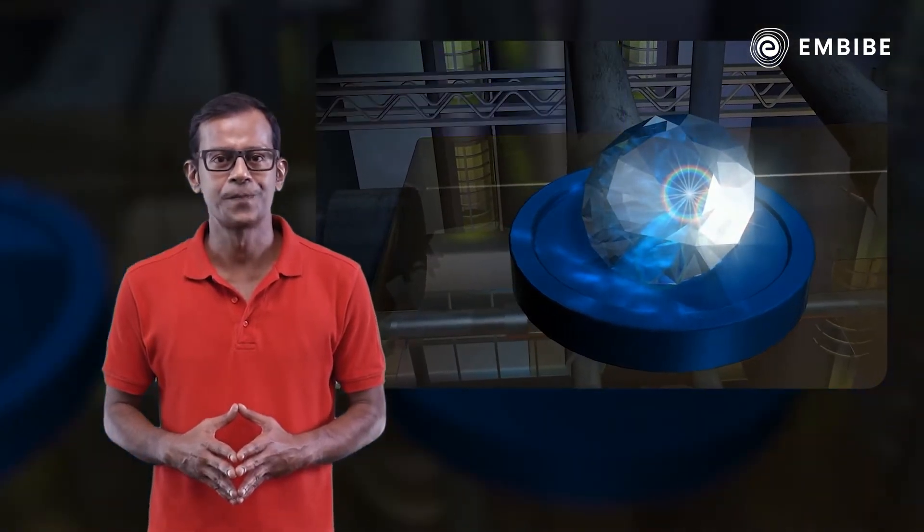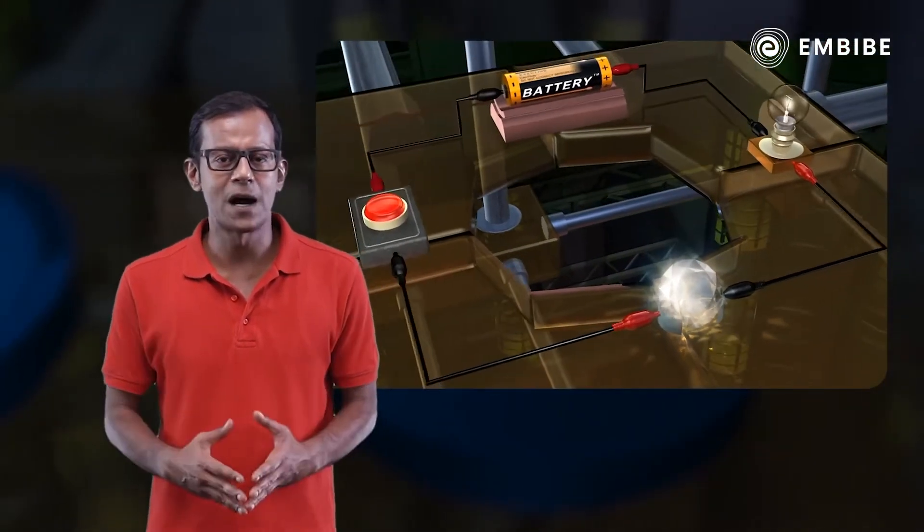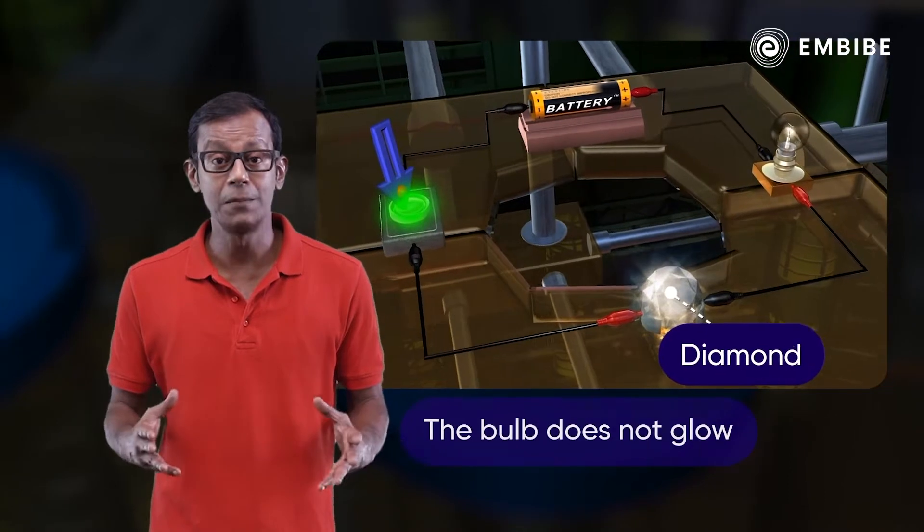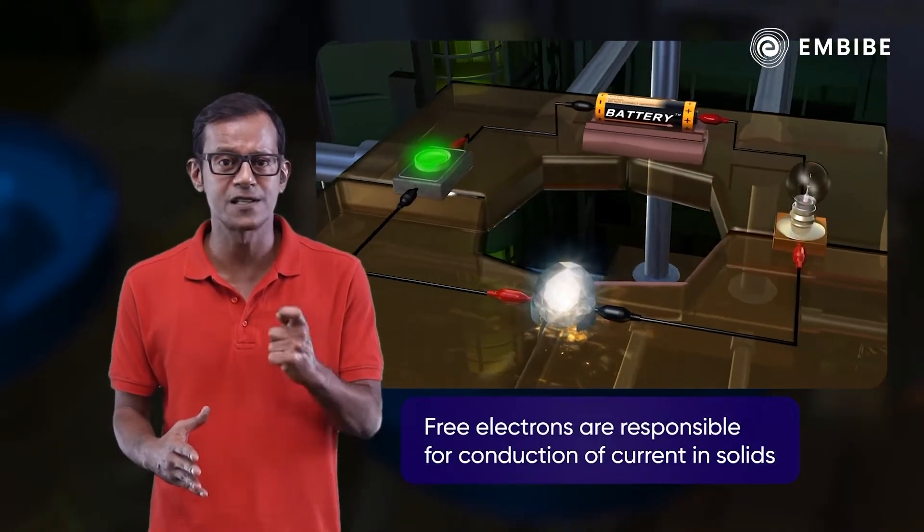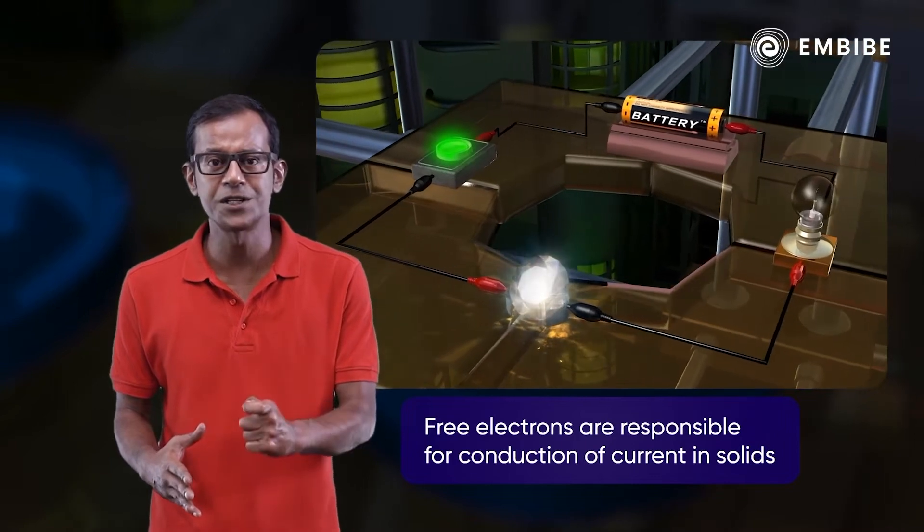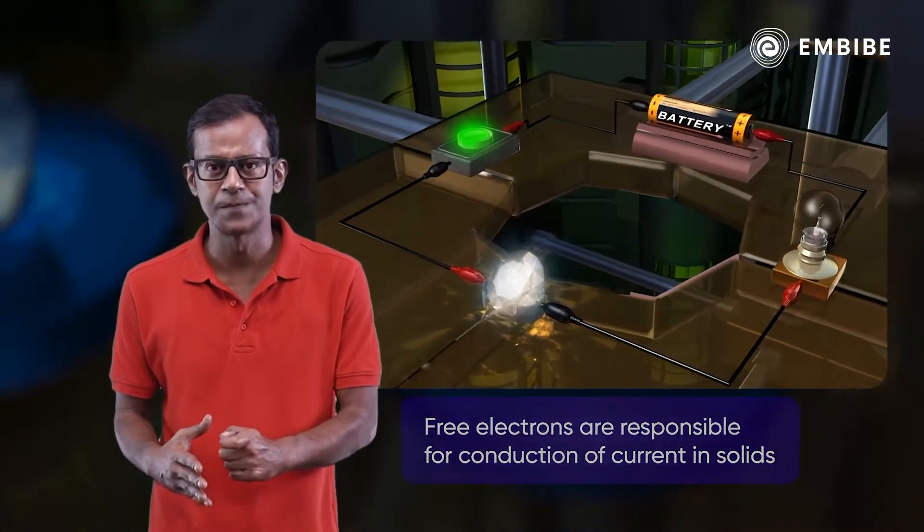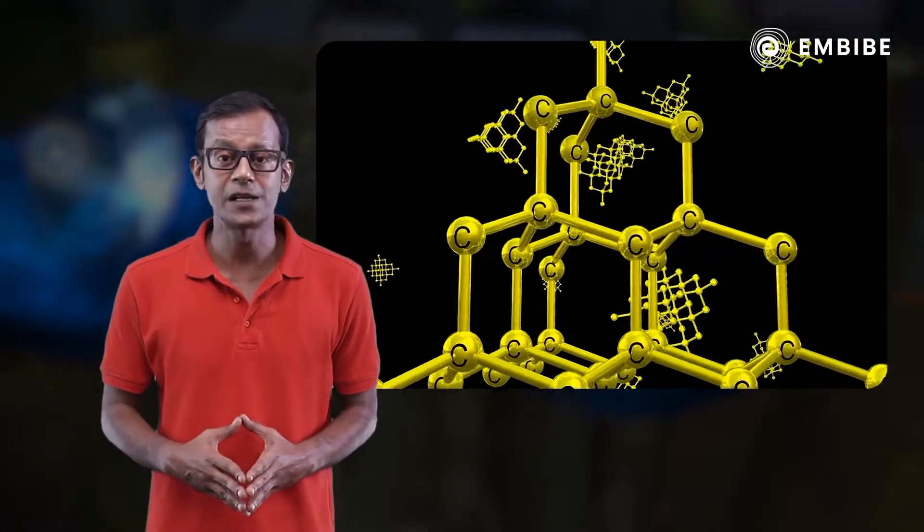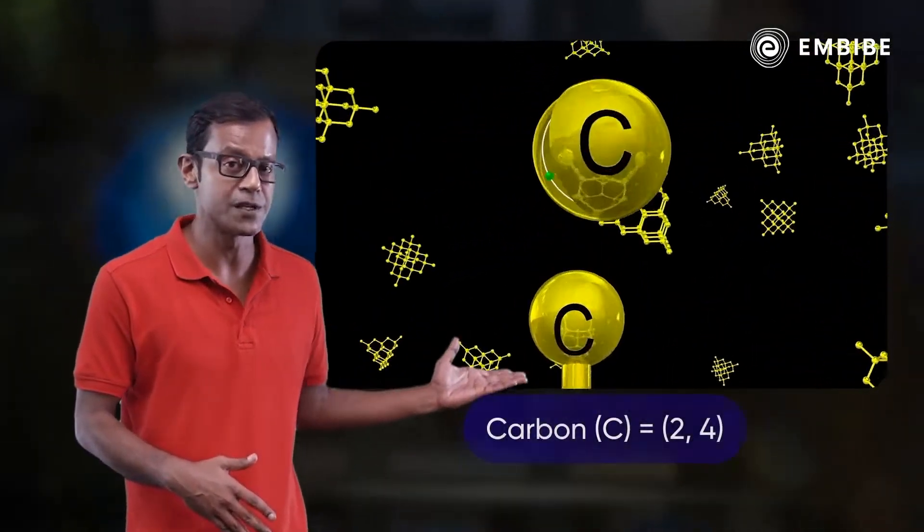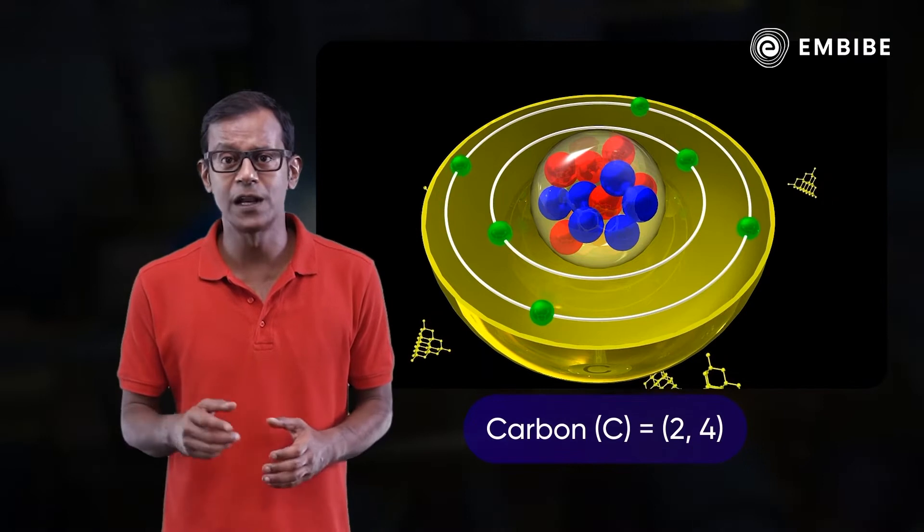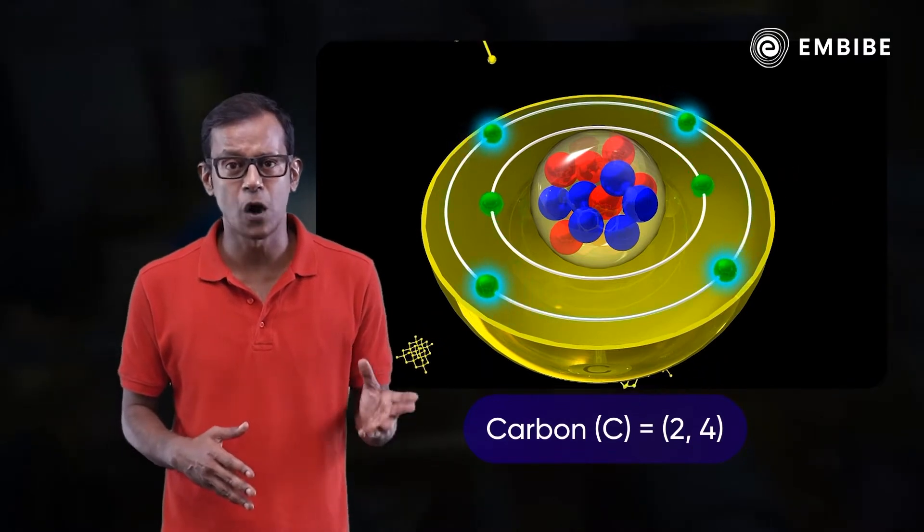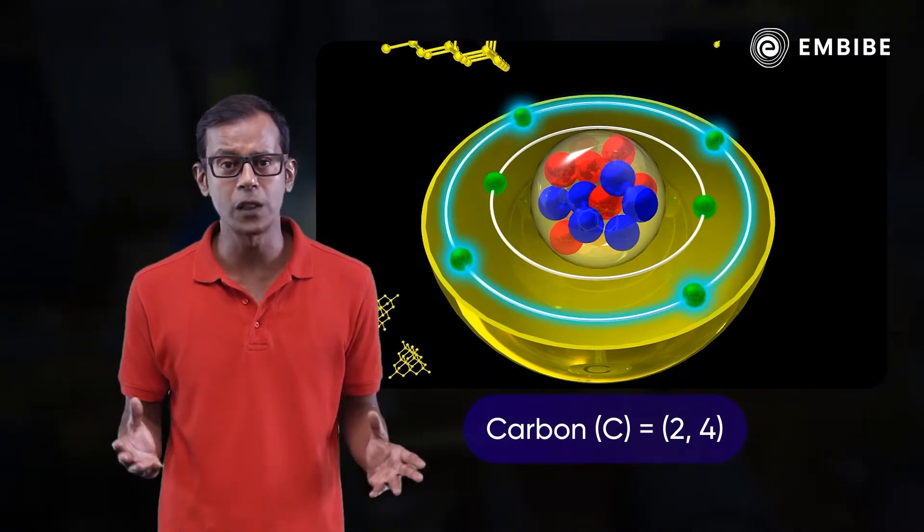Structure and properties of diamond: When an electric current is passed through a diamond, the bulb does not glow. We all know that free electrons are responsible for the conduction of current in solids. In a diamond, the electronic configuration of carbon is 2,4—that is, it contains four electrons in its outermost orbit.